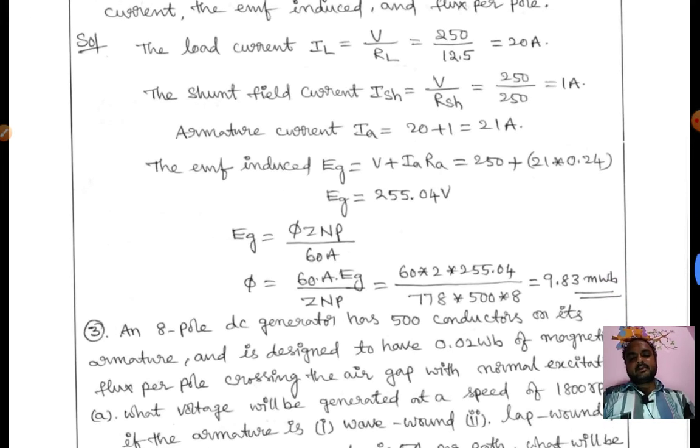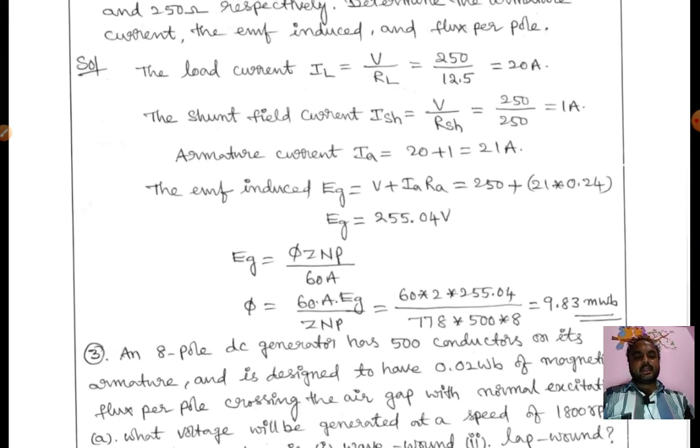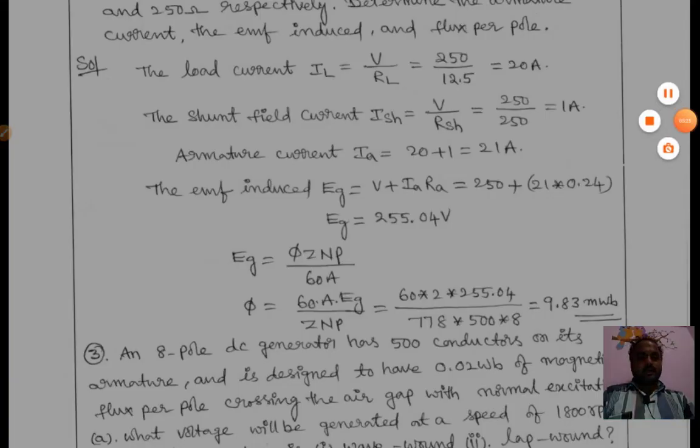From that Eg, we can calculate the flux per pole φ = 60 × A × Eg / (Z × N × P). Substitute the values and calculate, we will get 9.83 milliwebers. This is the problem based on DC generator.